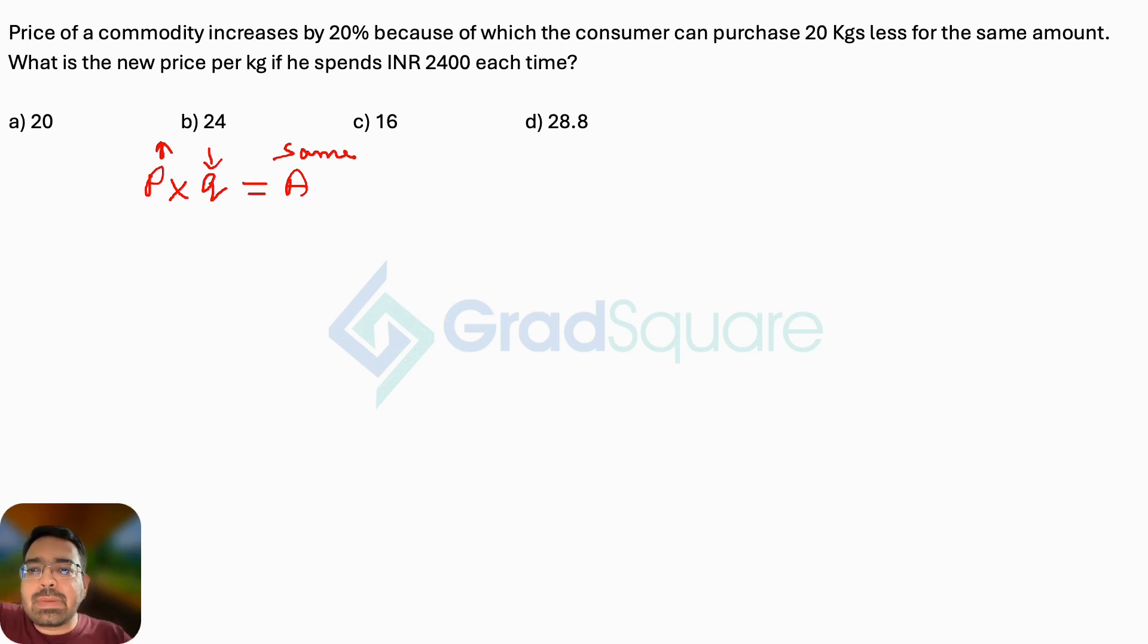Now the price increases by 20%. Let's say the original price was P, original quantity was Q, and the original amount was A. Price increases by 20%, that means on this value of P you are getting an increase of 20%. That means it will be P plus 1/5P, that will make it 6/5P. So my new price is 6/5 times the original price.